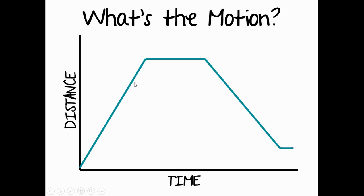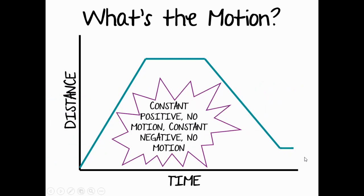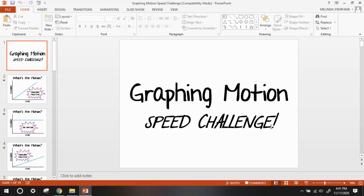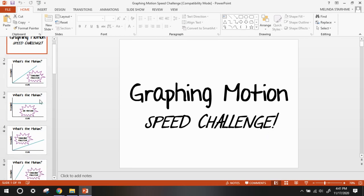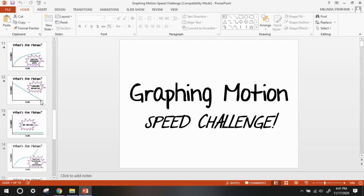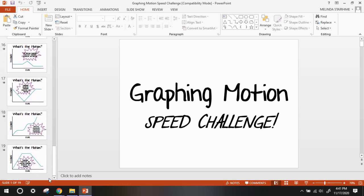This first segment is moving up the y-axis in a straight line, so this is constant positive motion. This is a constant negative line because it is a straight line moving down the y-axis. And this little last segment is a flat line, meaning no motion. I'm hoping that you were able to guess the motion for each segment before I revealed it.